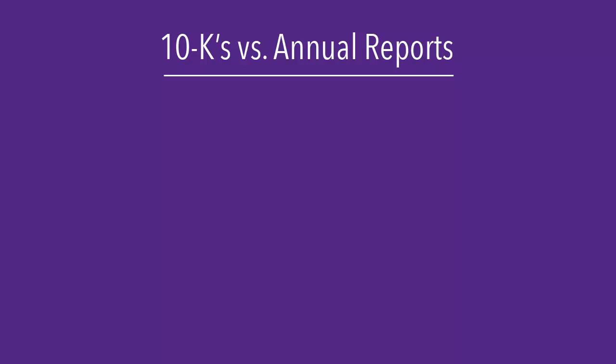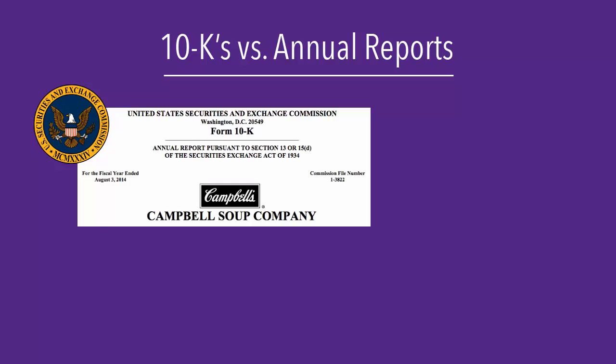As mentioned in the Determining if a company is public or private video, public companies are required to file a number of documents with the Securities and Exchange Commission. This includes a 10-K, which is filed annually and discusses a company's financial performance.